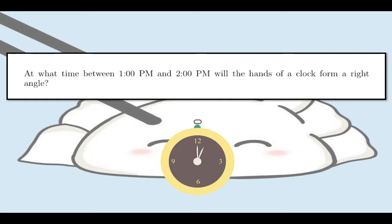Hello everybody! Let us try to answer this item from geometry, particularly on the angles formed by the hands of a clock. At what time between 1pm and 2pm will the hands of the clock form a right angle?